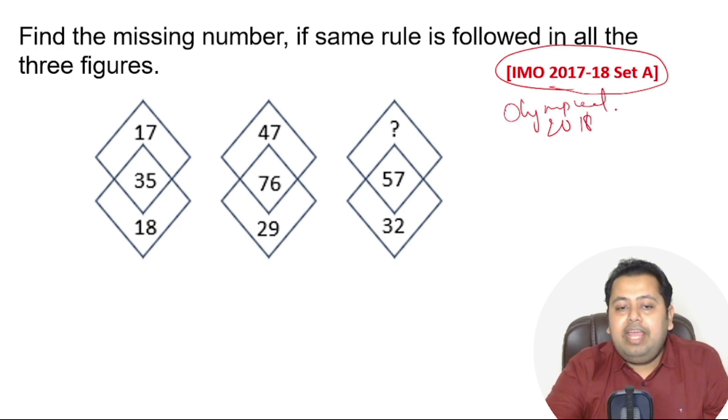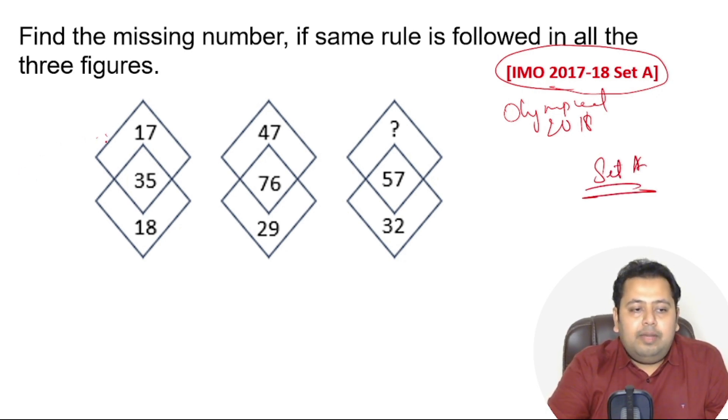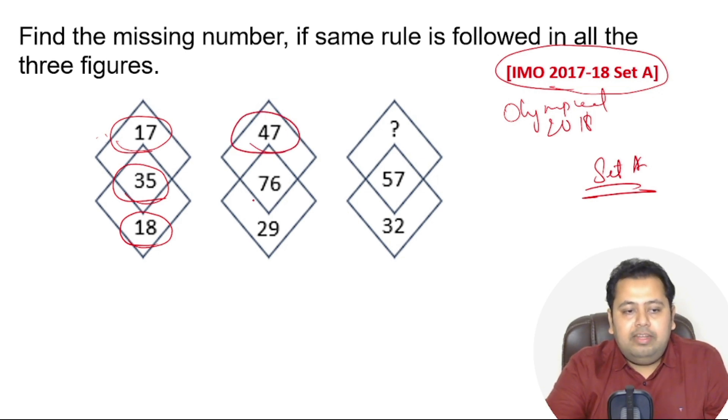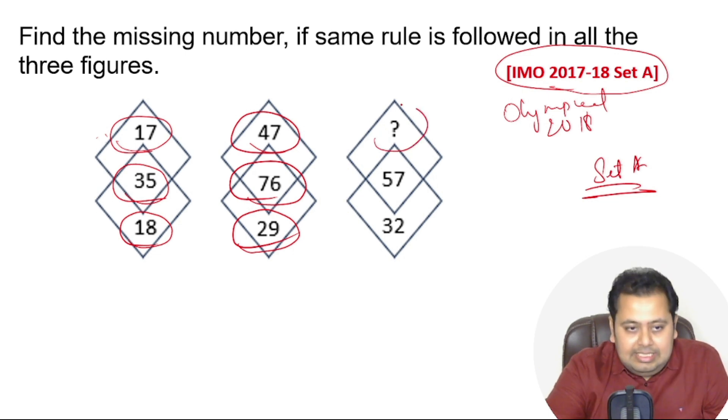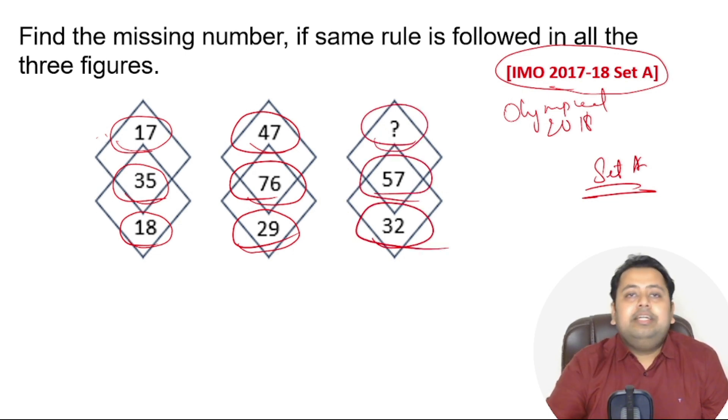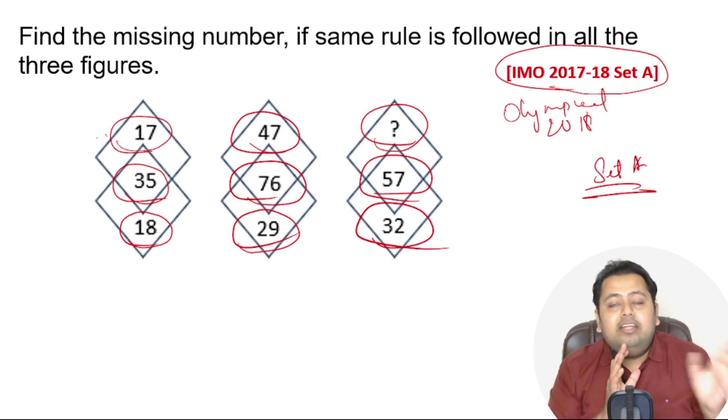The question is: you can see 17, in middle it is 35, and then it is 18. Here you can see 47, the middle number is 76, and then you have 29. This is the number you have to find out, in middle it is 57, and it is 32. There is a pattern here. You have to find out the pattern and then find the number that is given by question mark.